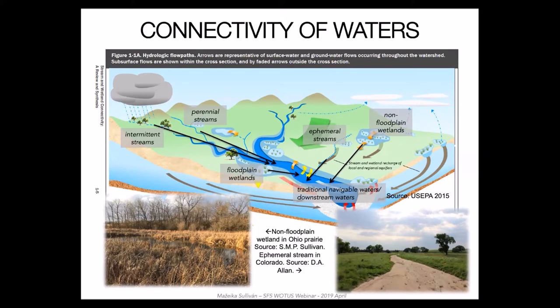Floodplain wetlands are found next to rivers and lakes, whereas non-floodplain wetlands — referred to occasionally as isolated, and in the proposed rule referred to as isolated — are located elsewhere in a watershed. Common examples are playas, prairie potholes, vernal pools, and others. The black arrows represent potential connectivity with downstream waters. Under the current rule, all streams are protected, as are floodplain wetlands, with non-floodplain wetlands to be evaluated on a case-by-case basis.